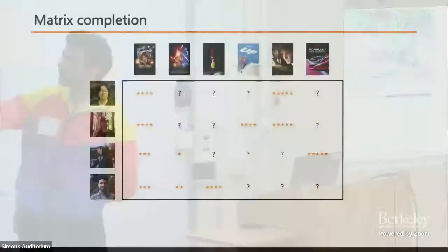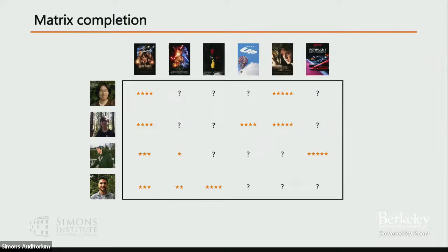Matrix completion is probably very familiar to a lot of you. The canonical application is recommendation systems, where rows are different users, columns are different movies. There are lots more movies than any human could rate, so you see a very sparse setting where a set of entries is observed, and the goal is to somehow recover the missing entries. That's what matrix completion is about at the highest level.